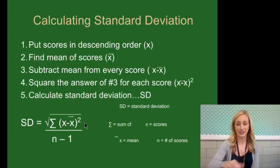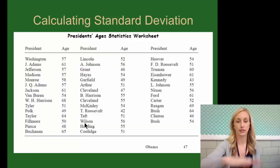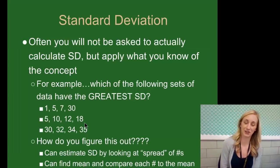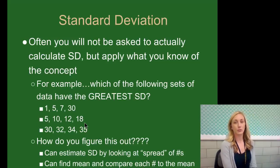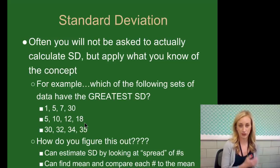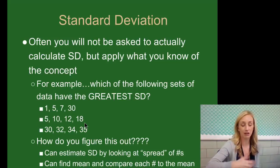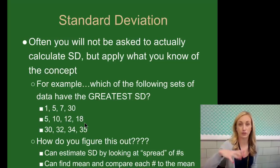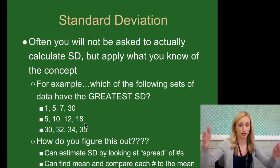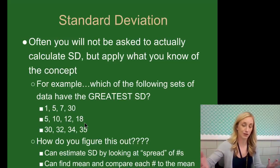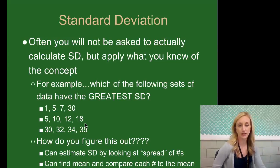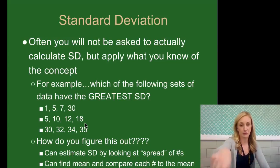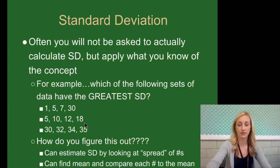Calculating standard deviation involves a long formula, but often you won't be asked to actually calculate it — you need to apply it conceptually. A common test question is: which of the following sets of data has the greatest standard deviation? You can estimate standard deviation by looking at the spread or range of numbers. For example: 1 to 30 is a range of 30; 5 to 18 is less; 30 to 35 is even less. You could also find the mean and compare each number to it, but looking at range is faster. The difference between 7 and 30 is much greater than between 5 and 7, so there's a lot of standard deviation in that first set.